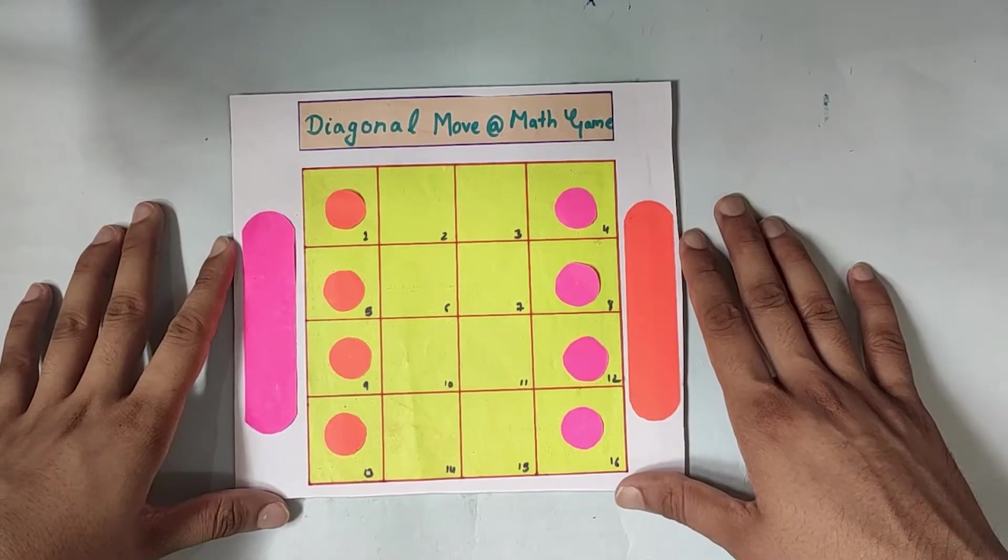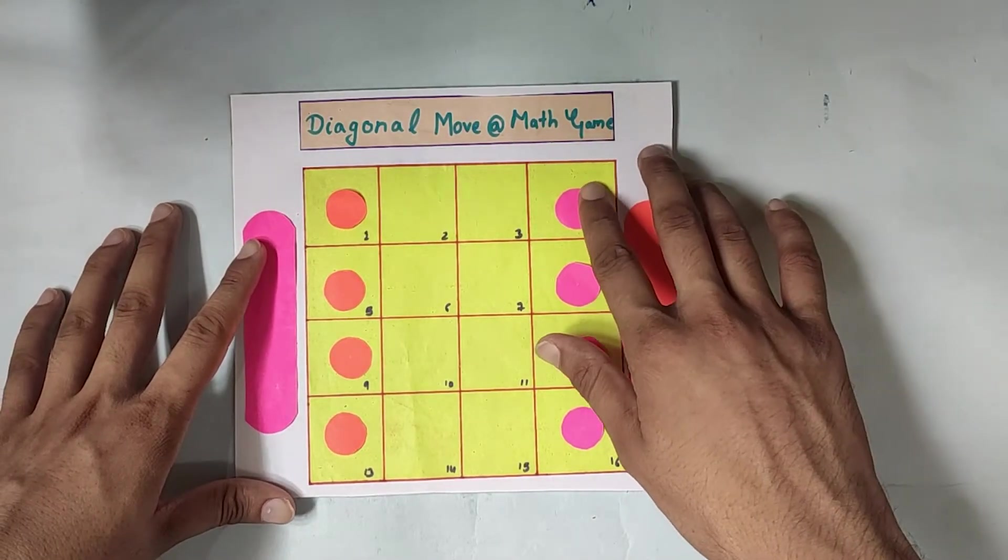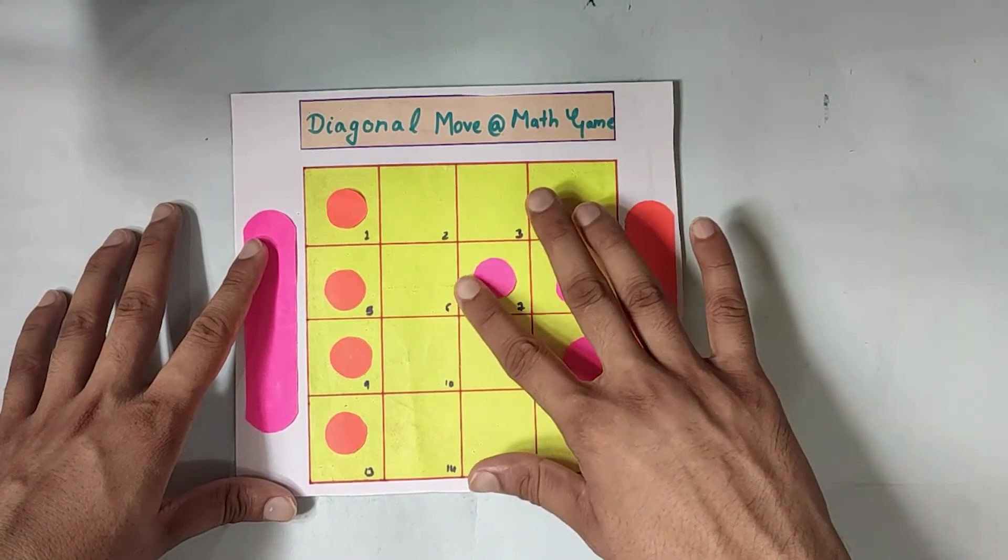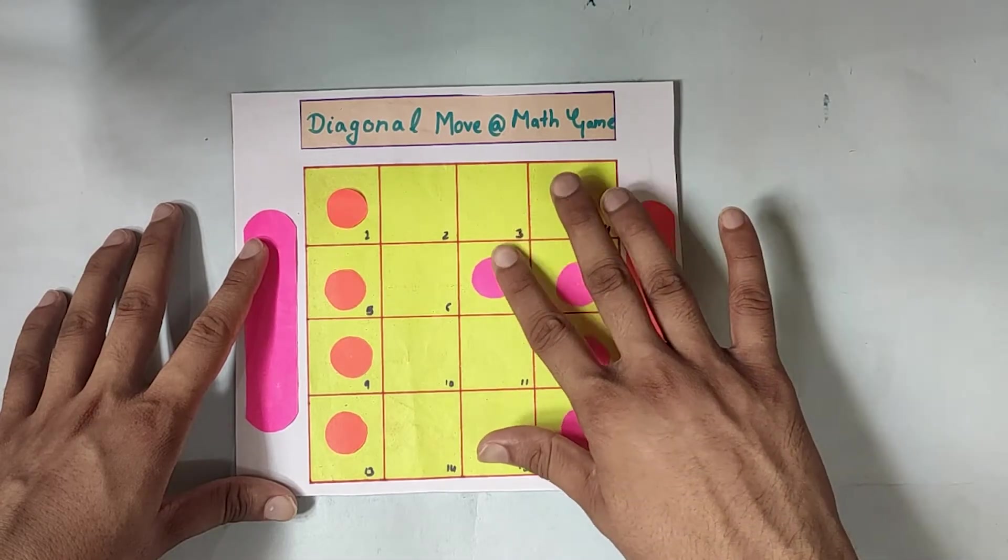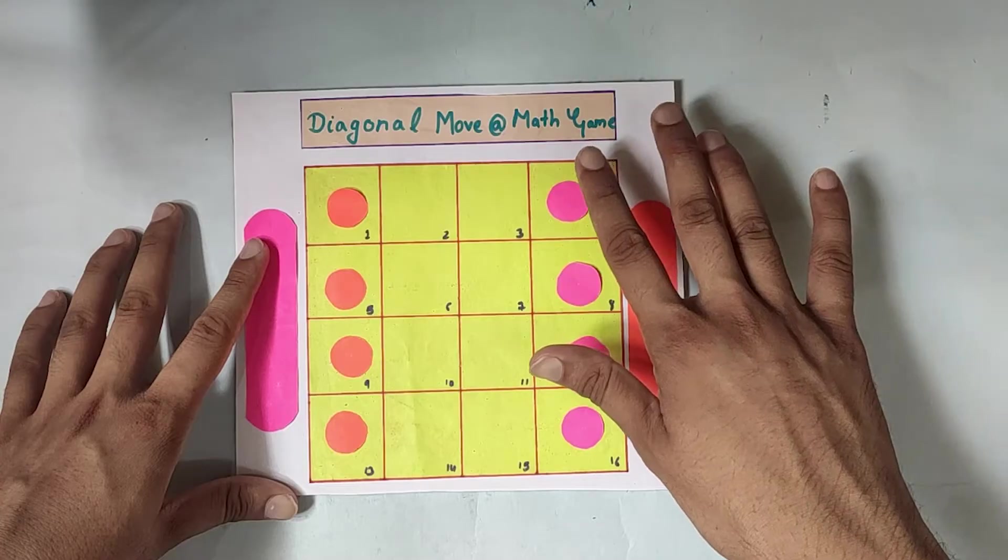Let's quickly take one example on how we can play this game. So, let me start with this. This is one move. Either you can move two at a time or just here. This is called one diagonal move. Either to here or to here or to here as well. This is one diagonal move.